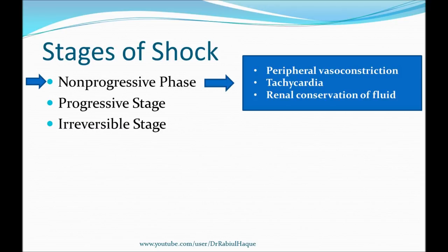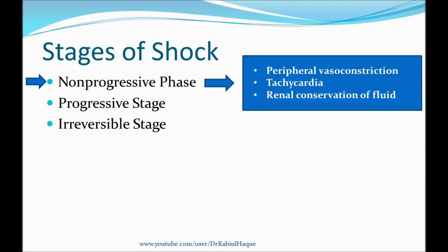One important note: although peripheral vasoconstriction occurs during shock generally, in septic shock there can be vasodilation. In other types of shock, cutaneous vasoconstriction results in cold and pale skin in the patient. However, in septic shock there will be cutaneous vasodilation, resulting in warm and flushed skin. So in septic shock we will have warm and flushed skin, whereas in other varieties of shock we will have cold and pale skin.